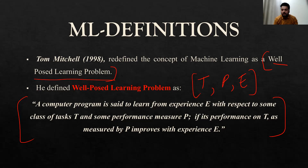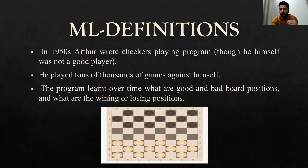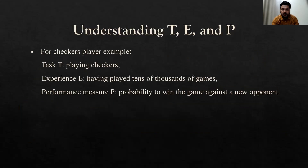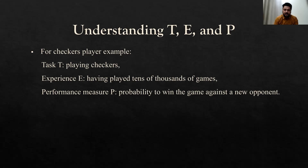I gave the example that over time, when the player plays again and again, with experience they will know which position is good or bad. For the checkers example: the task is to play the game, the experience is having played tens of thousands of games, and the performance measure P is the probability of winning against a new opponent. So the probability of winning is called P here.